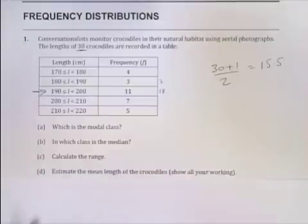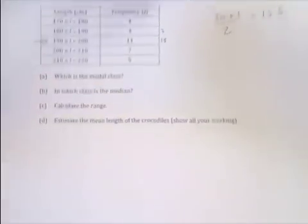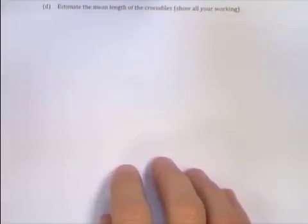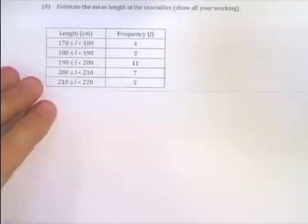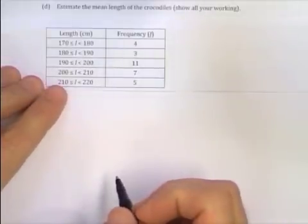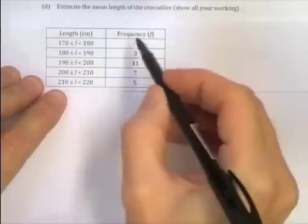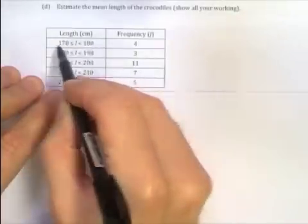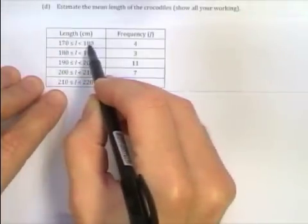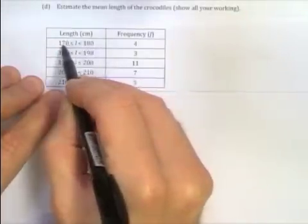Another typical question is estimate the mean length of all the crocodiles. If I do this I must show all my working. I'll move that up and I'll start off with a copy of that table. Now to work out the mean length I've got to work out the total length. Now I know four crocodiles were somewhere in between this, but I don't know exactly what the measurements were.